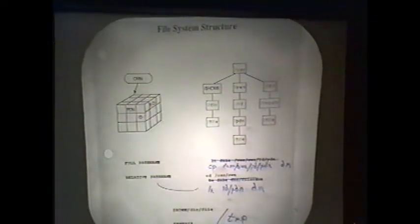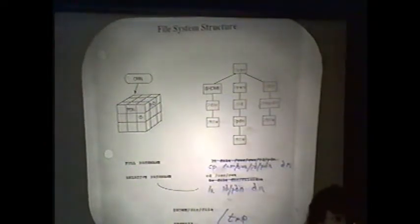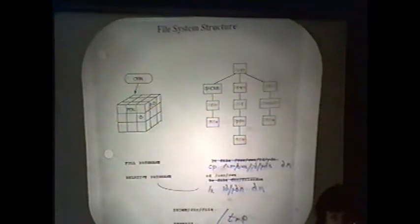Autotasking happens only at the loop level — it inserts compiler directives for you and makes it easier to get the code up and autotask. We're going to have somebody come in and talk about autotasking later in the week and give some handouts and benchmark numbers.